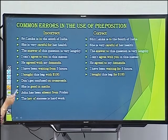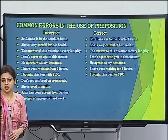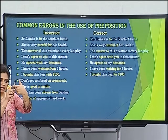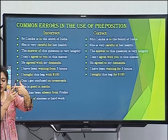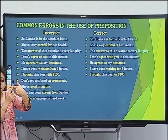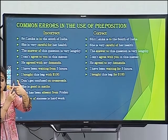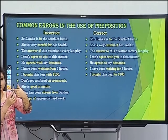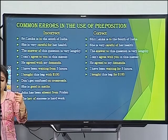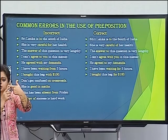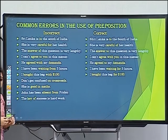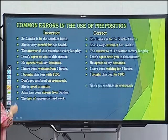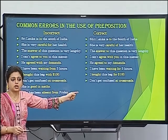Error with 'crossroads': crossroads represent a fixed point or place. Therefore, 'at' should be used. Correct: 'Don't get confused at crossroads.' Since crossroads is a specific fixed location, 'at' is the appropriate preposition.